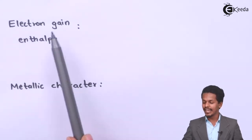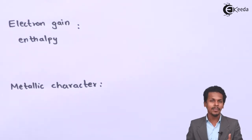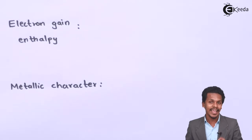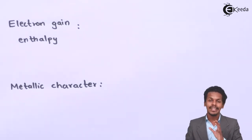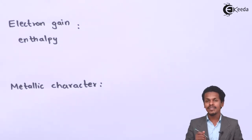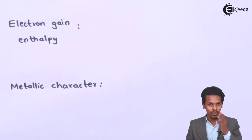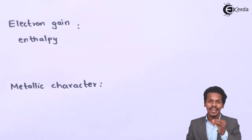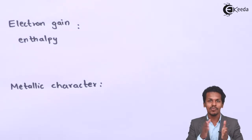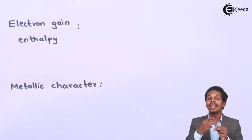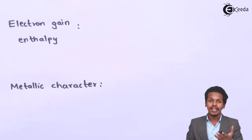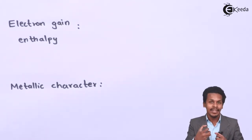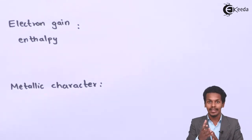The next point is electron gain enthalpy — the energy released when one mole of electrons is accepted by an atom. Oxygen is the most electronegative element in group 16 and also has the smallest atomic size. Because of this, all the electron cloud surrounds the small oxygen atom, and whenever an additional electron is accepted it tends to be repelled, so the energy released is less than expected.